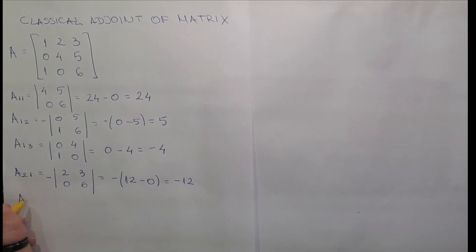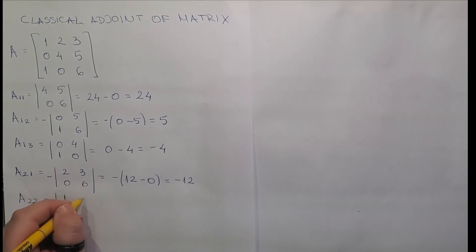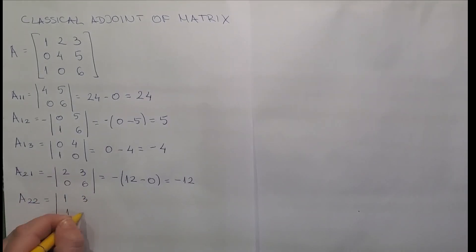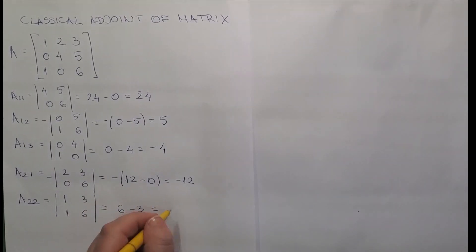So element a22. We are eliminating row number 2 and column number 2. So we have left with 1, 3, 1, 6. So we have 6 minus 3 is equal to 3.